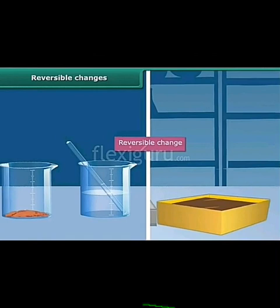If you melt ice it will become water, and if you freeze the water it will become ice again. All these are examples of reversible change — reversible means you can change it back.